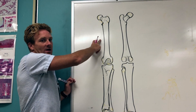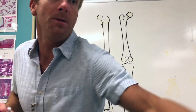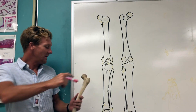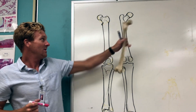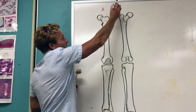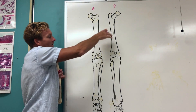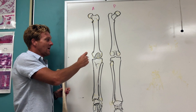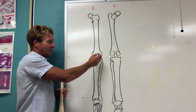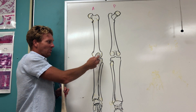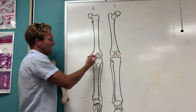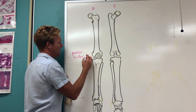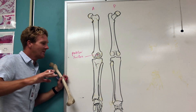Up here is the femur. What I've done is we've got two views of the left femur here. This is going to be the anterior view, or the front view, and this is going to be the posterior view. One giveaway that you're looking at the anterior surface is that this little surface right here at the distal end of the femur — this is where the patella slides. That's called the patellar surface, and it's located right there, which tells you that that's the anterior view.